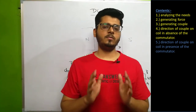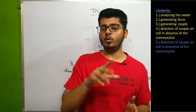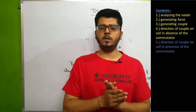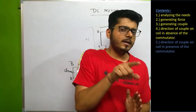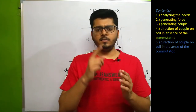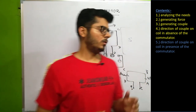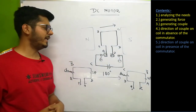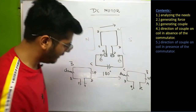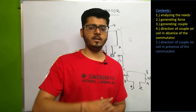Hopefully you have understood the functioning of the commutator of a DC motor. The conclusion is: the commutator maintains the direction of couple in one way so that our motor keeps on rotating in one direction. That is the whole idea behind the DC motor and how it works. I'll see you in the next video. Take care.